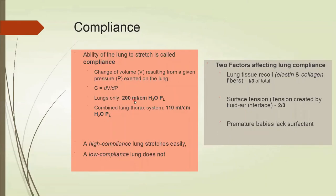The normal compliance of the lung is 200 milliliters per centimeter of water of distending pressure. That means for every one centimeter increase in distending pressure, a normal healthy lung should stretch by 200 mL. However, when the lungs are placed within the thoracic system, the compliance drops to 110, because the thoracic bones and structure check the distensibility of the lung.